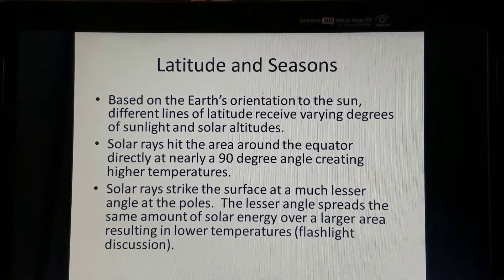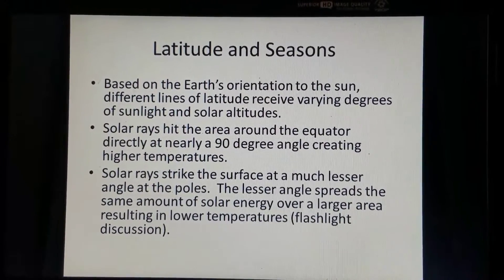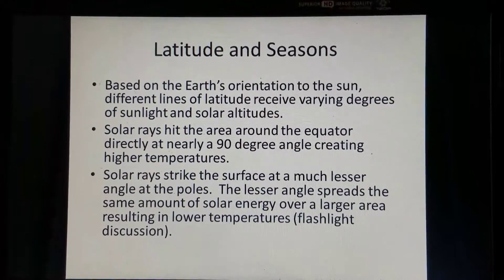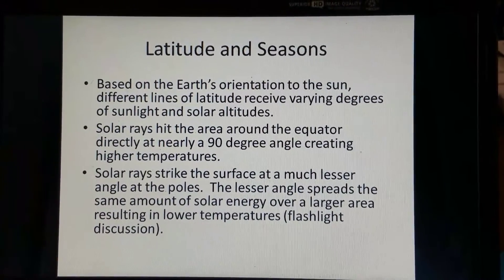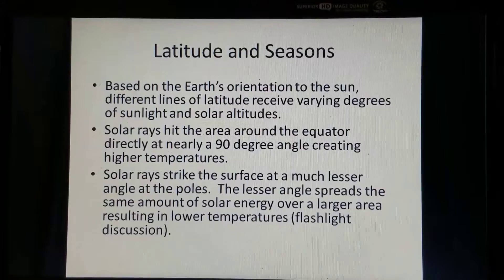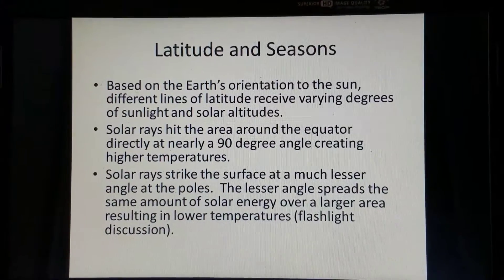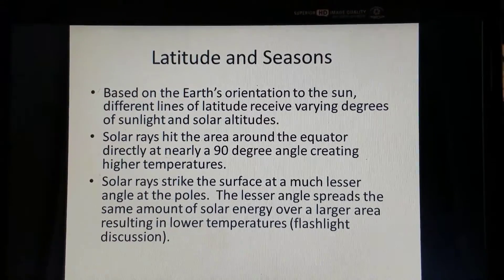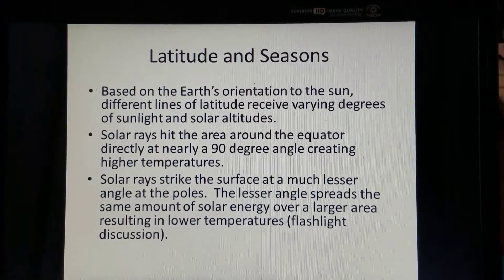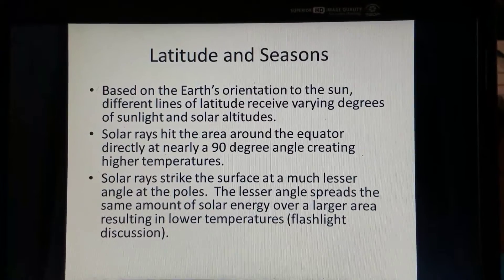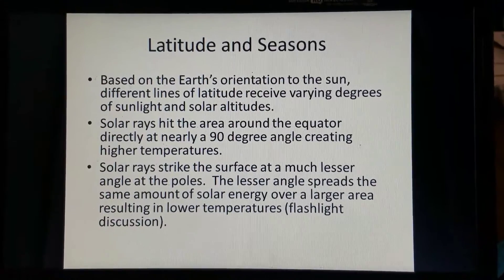When I tie in latitude and seasons, this is based on the Earth's orientation in relation to the sun. Different lines of latitude receive varying degrees of sunlight and varying degrees of how high the sun gets in the sky, known as the solar altitude. The solar rays hit the area around the equator much more directly, almost at a 90-degree angle, creating higher temperatures. Whereas solar rays strike the surface at a much lesser or lower angle at the polar areas, spreading the same amount of solar energy over a much larger area and resulting in lower temperatures.